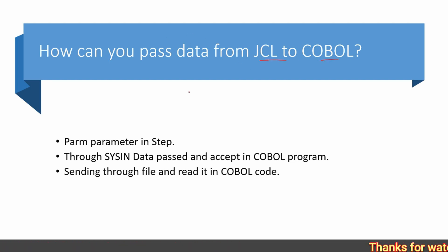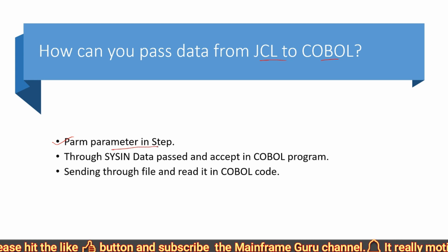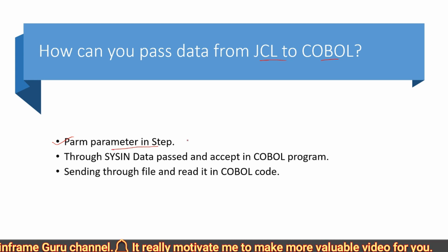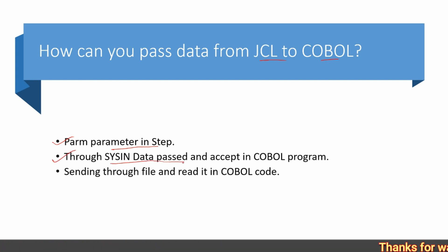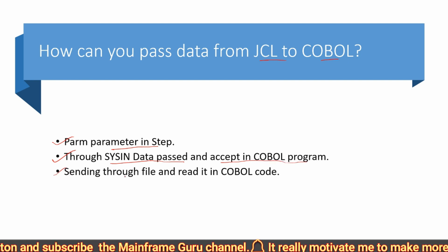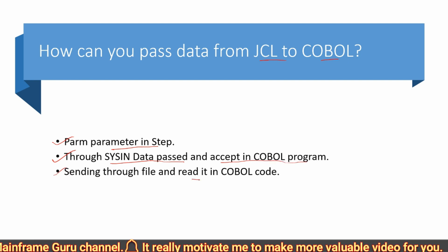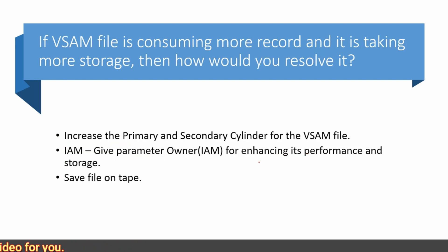How can you pass data from JCL to COBOL? There are three ways: first, through PARM parameter on the EXEC step; second, through SYSIN and DATA, using DISPLAY and ACCEPT in the COBOL program; and third, by sending through a file and reading it in the COBOL code.